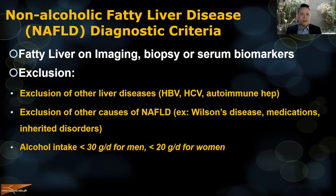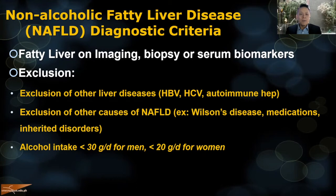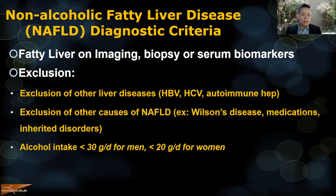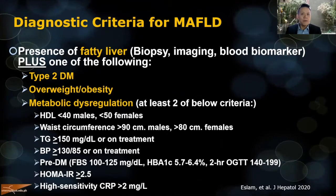Once you have fatty liver, you have to exclude other causes — hepatitis B, hepatitis C, other chronic liver diseases, and especially alcohol. The problem is that most patients with fatty liver may have concomitant other causes of chronic liver injury. For example, a patient with hepatitis B who is also obese and diabetic is likely to have fatty liver as well. That is why the consortium of international experts came up with the term MAFLD.